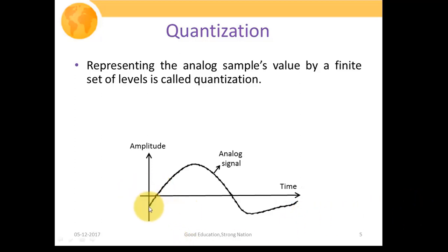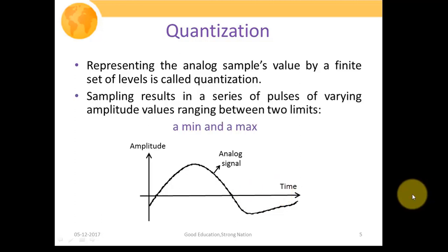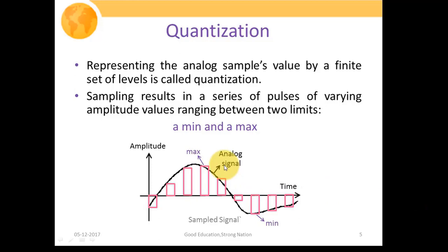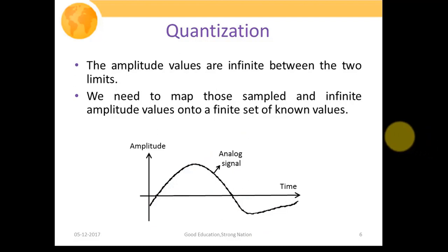This figure shows the continuous time value of the signal on the y-axis with varied amplitude and time on the x-axis. Sampling results in a series of pulses of varying amplitude values ranging between two limits. The amplitude values are infinite between the two limits. We actually need to map those sampled infinite amplitude values into a finite set of known values so that we can approximate our signal, or digitize them.